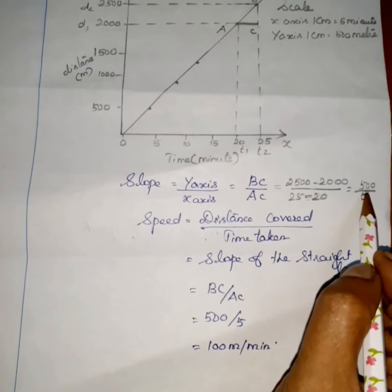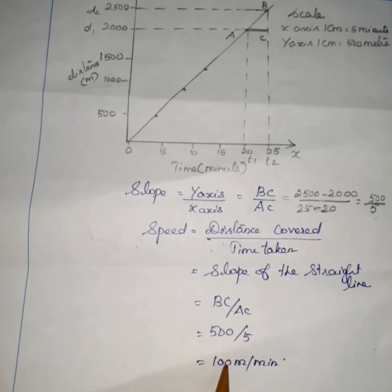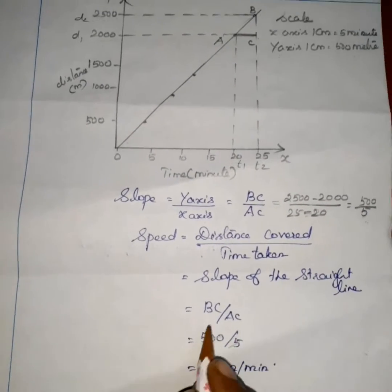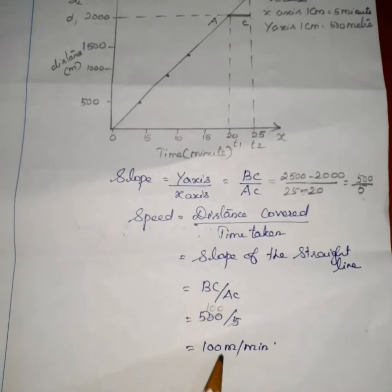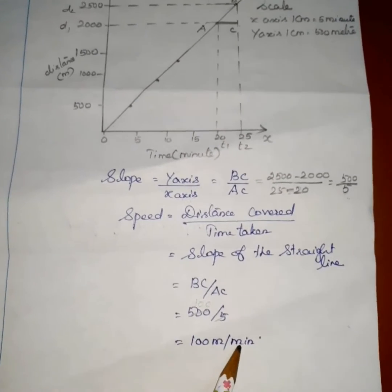The speed is constant — it is unaccelerated motion. Taking any two points, the slope equals y-axis divided by x-axis. Here BC divided by AC equals (d2 minus d1) divided by (t2 minus t1), which is (2500 minus 2000) divided by (25 minus 20) = 500 divided by 5 = 100 meters per minute. The slope of the straight line equals the speed.